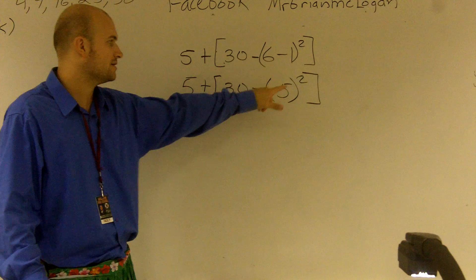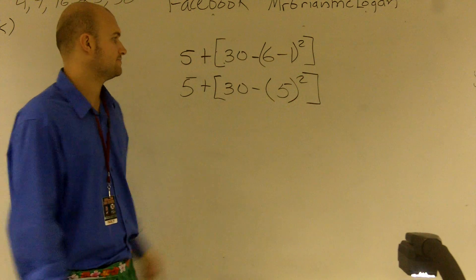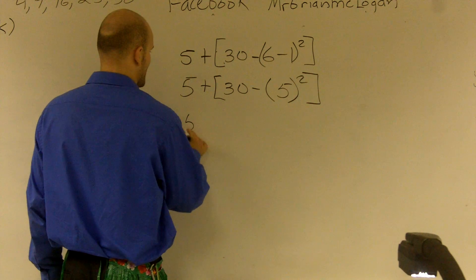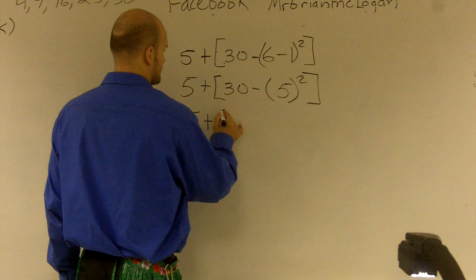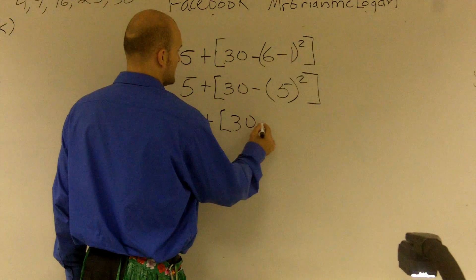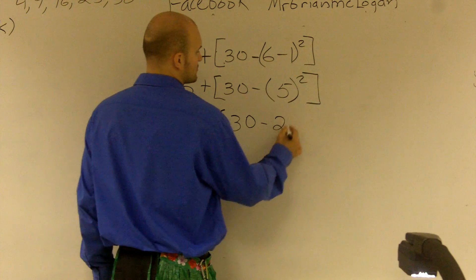Yes, I see an exponent right here. So I'm going to do 5 squared. So I have 5 plus 30 minus, 5 squared is 25.